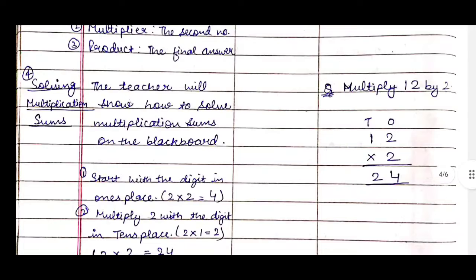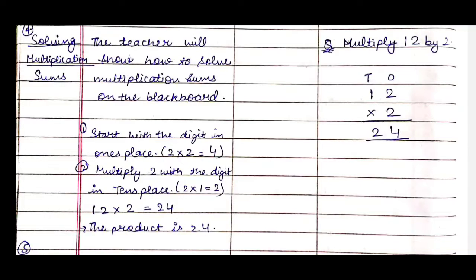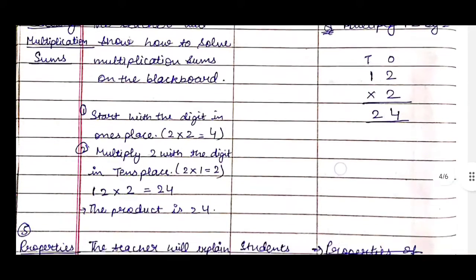The next teaching point is solving multiplication sums. We will show how to solve on the blackboard. For example: multiply 12 by 2. We write the question in tens and ones columns. First step: start with the digit in the ones place — 2 × 2 = 4. Then multiply 2 with the digit in the tens place — 2 × 1 = 2. So 12 × 2 = 24; the product is twenty-four.